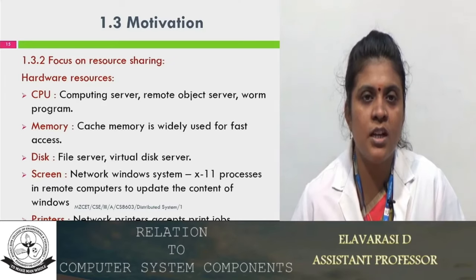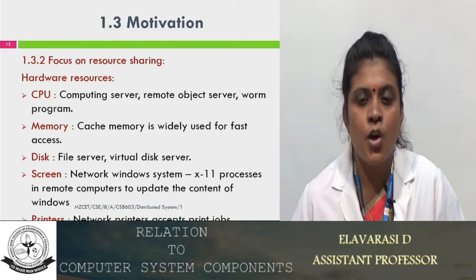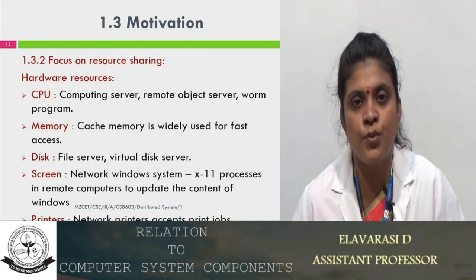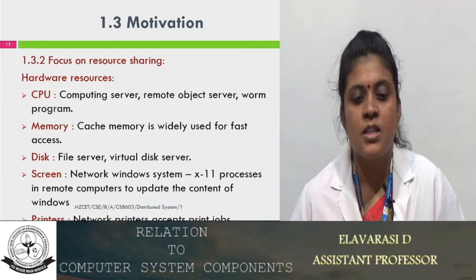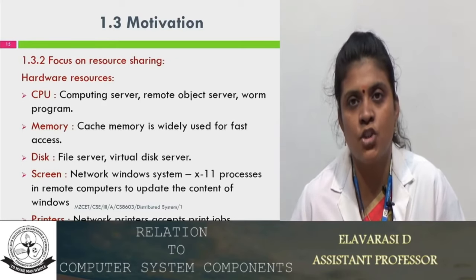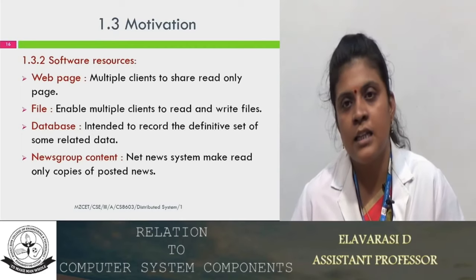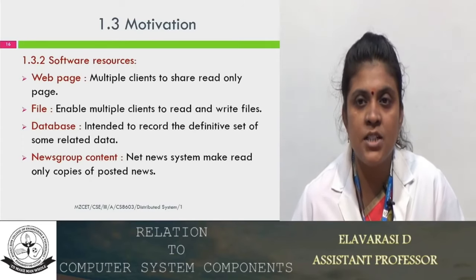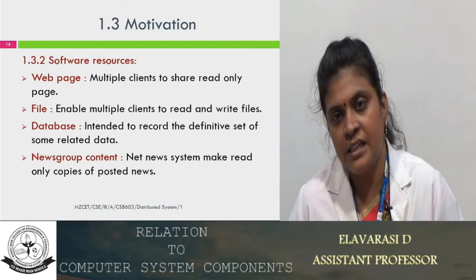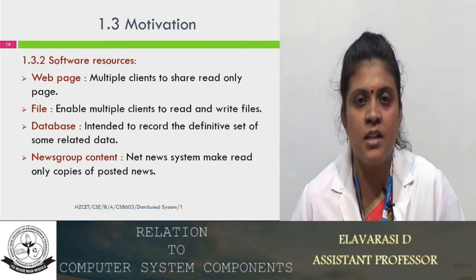We have to focus on resource sharing. If it is hardware, we go for a CPU — that is a computing server, remote object server, or web server. Memory means cache memory is widely used for fast access; disk file server and virtual disk server; and screen is used to update the content of windows. Printers are able to execute jobs. Software resources may include web pages shared by multiple users as read-only, file systems enabling multiple clients to read and write files, and databases intended to record a definitive set of related data, as well as updating news group contents.